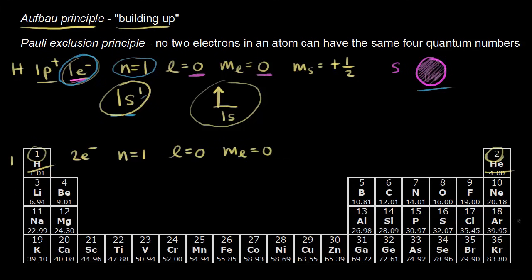We're still talking about an s orbital in the first energy level for helium. In orbital notation, we draw the 1s orbital and place the first electron spin up. But for the second electron of helium, we have to do spin down — we have to pair the spins: one spin up and one spin down. Why do we have to do that?